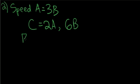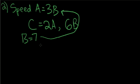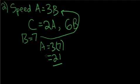The speed of train B equals 7, so let's plug this in. A equals 3 times 7, which equals 21. So the speed of train A is 21 per hour.